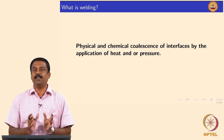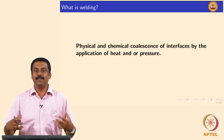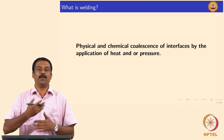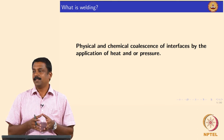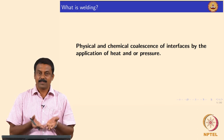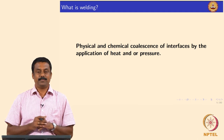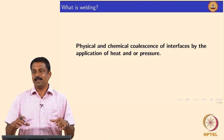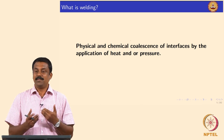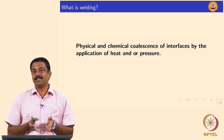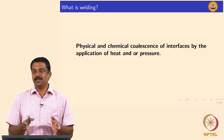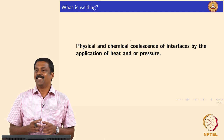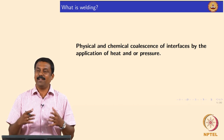This is the classical definition because everything is covered. A definition should cover all the physical phenomena happening in a process. We have physical and chemical coalescence of the interfaces, and coalescence is made to happen by application of heat or pressure or both. This is the first question my professor asks anyone who joins his group, and he judges teaching level based on how well it is answered.